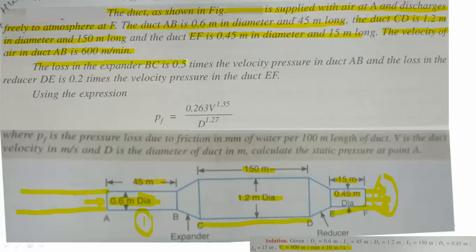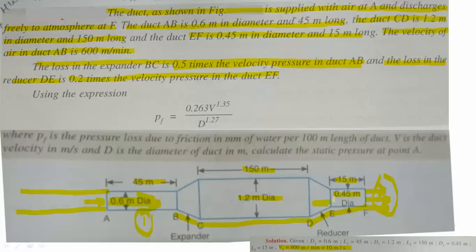The losses in the expander BC is 0.5 times the velocity pressure in duct AB — that is 0.5 times the dynamic head of AB. The loss in the reducer DE is 0.2 times the velocity pressure in duct EF — so 0.2 times the dynamic pressure of EF.